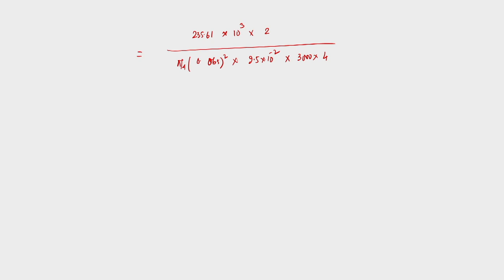Dividing by 10⁵ to convert to bar, the brake mean effective pressure comes out to 74.74 bar.